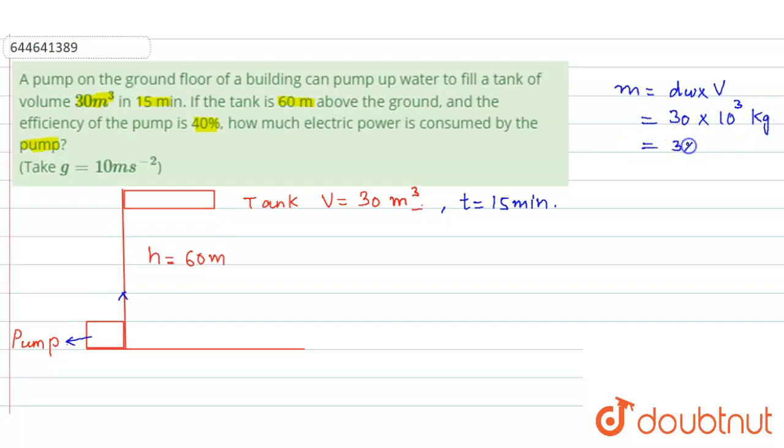Now how much work will be done? This pump will have to do the work against gravity. So how do we find the power? Power output that we need will be simply equal to the gravitational work done divided by the time the pump takes. So this is the total output power that we are getting from this pump.